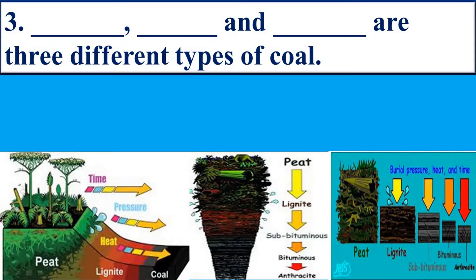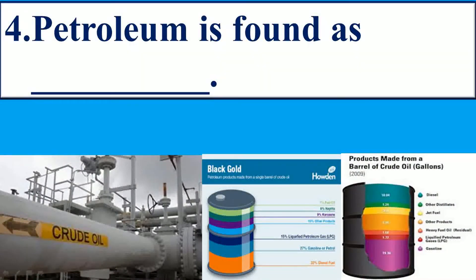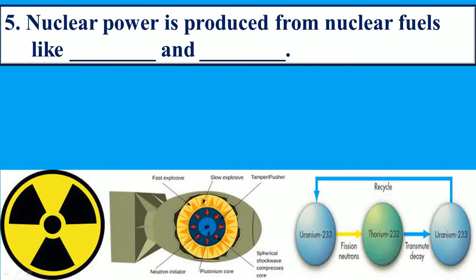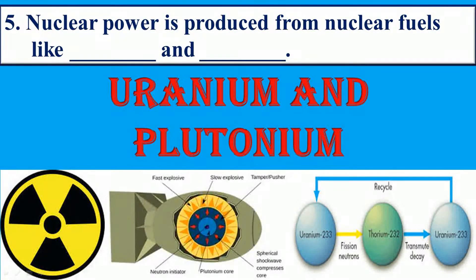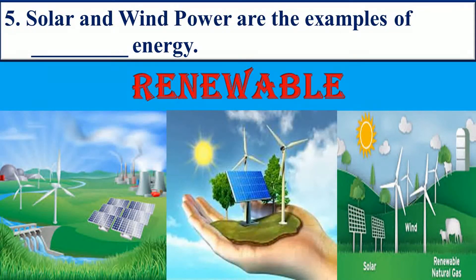Next question: blank, blank and blank are three different types of coal. Answer: anthracite, lignite and peat. Next question: petroleum is found as blank. Answer: crude oil. Nuclear power is produced from nuclear fuels like blank and blank. Answer: uranium and plutonium. Solar and wind power are examples of blank energy. Answer: renewable.